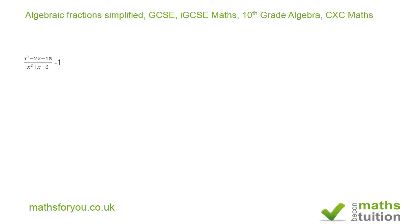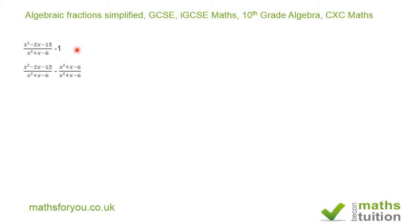Now this is what you've got here. We are asked to simplify x squared minus 2x minus 15 divided by x squared plus x minus 6, and then minus 1. So we've got two terms here.